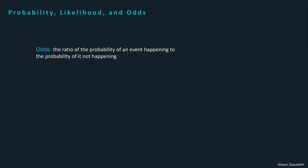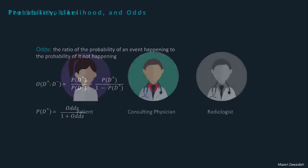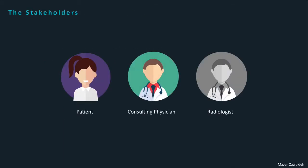Odds are simply the ratio of the probability of an event happening to the probability of it not happening. The odds of disease present equals the probability of the disease being present divided by the probability of the disease being absent — which equals the probability of disease present over 1 minus the probability of disease present. Note that we can convert back and forth from probability to odds: probability is simply odds over 1 plus the odds.